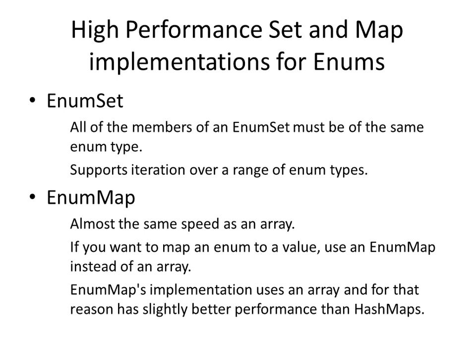Finally, Java provides high-performance set and map implementations for enums. There is a class called EnumSet and there is a class called EnumMap. For an EnumSet, all the members must be of the same enum type. You cannot combine enum values from two different enum types. For example, if you have the day of the week and colors, you cannot add both of them in the same EnumSet — they all have to be of the same enum type.